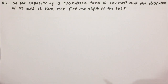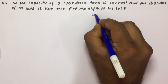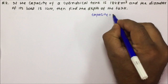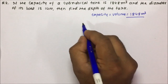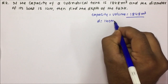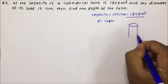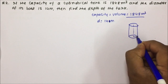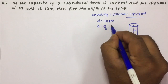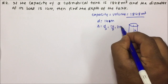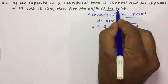Now moving towards question number 2. If the capacity of a cylindrical tank is 1848 meter cube — capacity of a cylinder is nothing but volume, so volume is directly given as 1848 meter cube — and the diameter of its base is 14 meter. So diameter is given as 14 meter. When diameter is given, radius will be nothing but diameter by 2 — so 14 by 2 will be equal to 7 meter. We have the radius, and we have the capacity, meaning the volume of the cylinder. Find the depth of the tank, so depth of the tank is h meter.